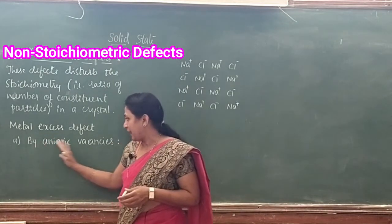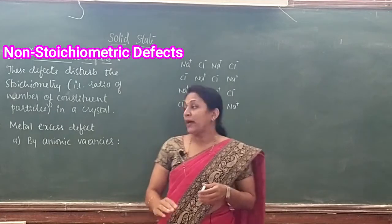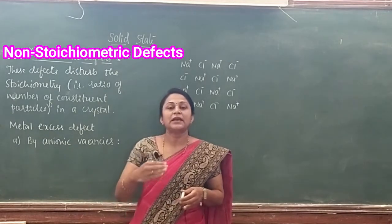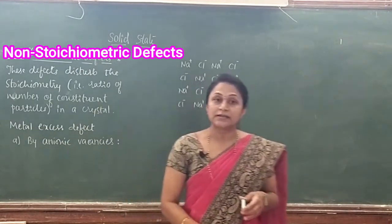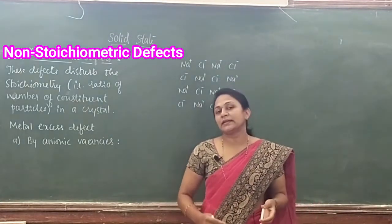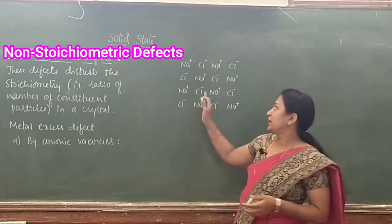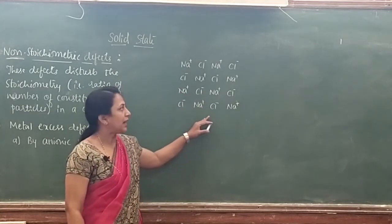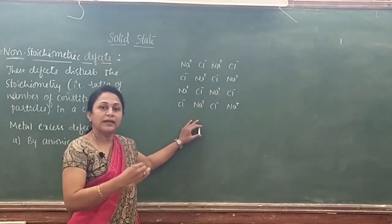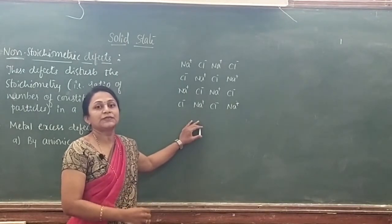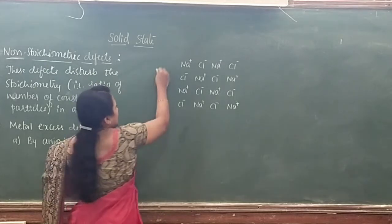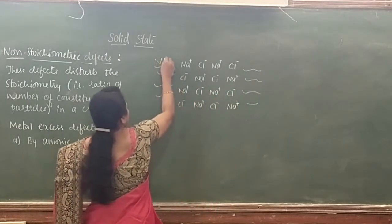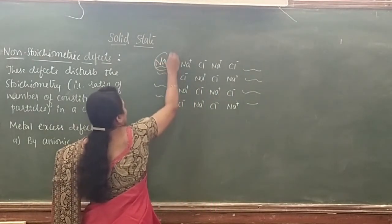Metal excess defects can arise by anionic vacancy. Metal excess means excess of metals — anions are missing from the crystal, creating a vacancy. Let us illustrate this with the example of sodium chloride, which we heat in the atmosphere of sodium.